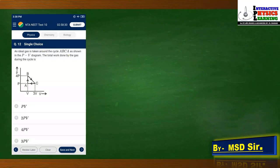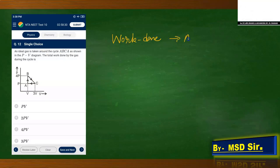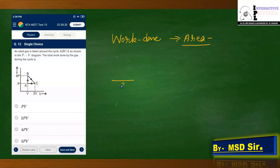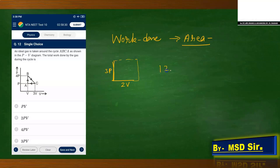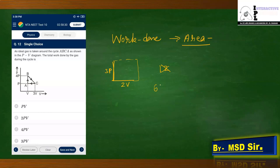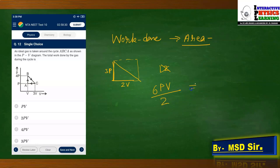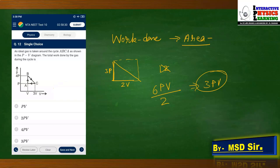Question 12: an ideal gas undergoes a cyclic process shown on a P-V diagram. Work done equals the area enclosed. The dimensions are: ΔV = 3V − V = 2V and ΔP = 4P − P = 3P. The enclosed area forms a triangle: W = (1/2)×2V×3P = 3PV. Correct answer: C (3PV).